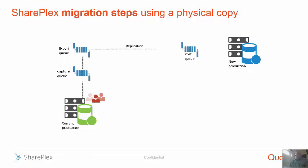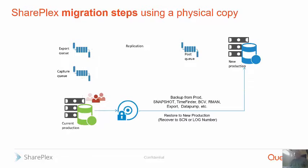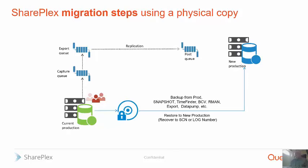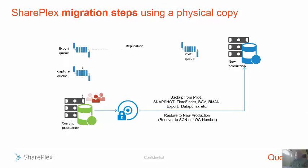Now you're going to take a backup of your source system to a particular SCN. If you're just moving versions of Oracle or migrating to the same hardware, you can use RMAN or whatever you want to take that backup, as long as it's consistent to an SCN. If you're changing hardware or doing other work, you may need to use export — you can use consistent equals Y, or make an intermediate copy of your database and back up that quiet copy using export. Either way works fine. You're still capturing the transactions that occurred since that SCN in the post queue and getting ready to move those over to the target.